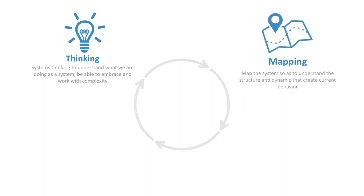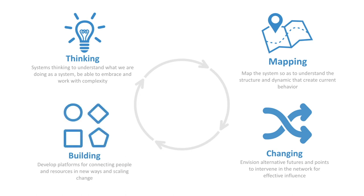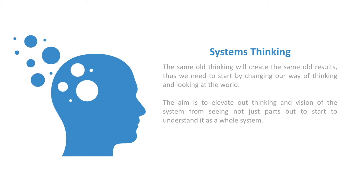Systems thinking helps us map out and understand the structure and dynamics of the system. As we know, same old thinking will create the same old results, so we need to start by changing our ways of thinking and looking at the world in new ways — we need a new paradigm. The aim is to elevate our thinking from seeing not just parts to understanding the whole system. We need to learn to recognize and work with complexity rather than pushing against it, walking members through a process of changing their paradigm to a more holistic vision.